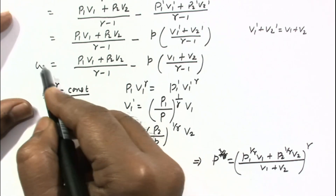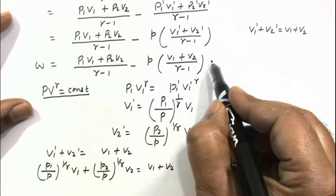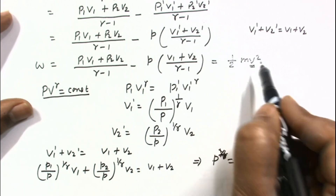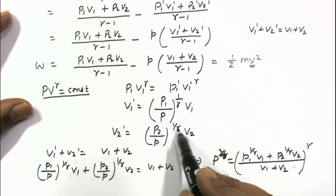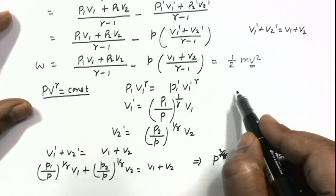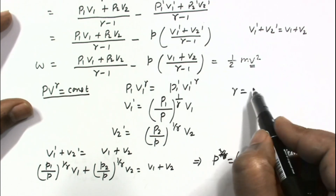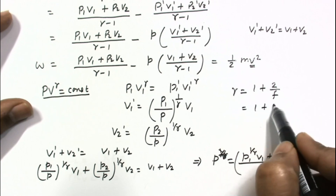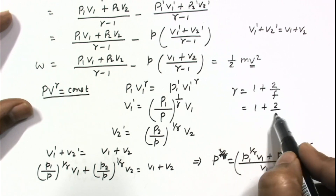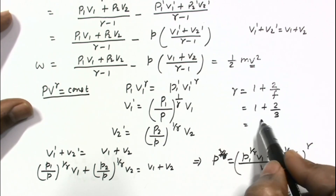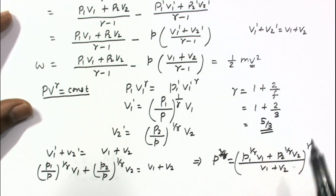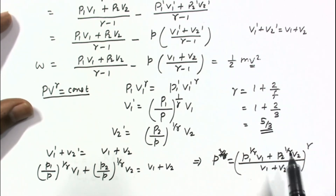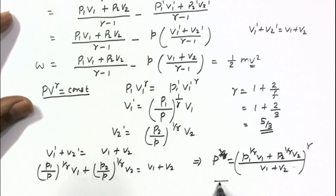With the final common pressure P found, we substitute it back to calculate the total work done, which equals (1/2)mv², allowing us to solve for the final maximum velocity. For helium, γ equals 1 plus 2/f, where f is the degree of freedom. For helium, a monatomic gas, f equals 3, so γ equals 5/3. We substitute γ equals 5/3 to get the final solution.